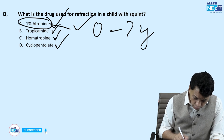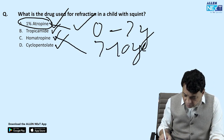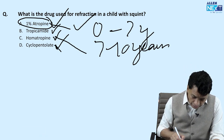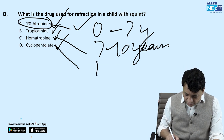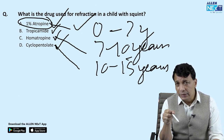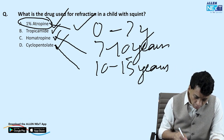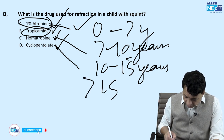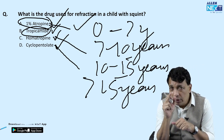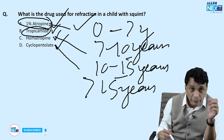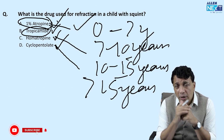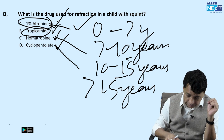Atropine is used for children aged 0–7 years, who have the most powerful ciliary muscles. Homatropine is used for ages 7–10 years. Cyclopentolate is used for ages 10–15 years. Tropicamide is used for anyone above 15 years. Since the question mentions a child without specifying age, we assume young children and the drug of choice is atropine to detect underlying hypermetropia causing the squint.